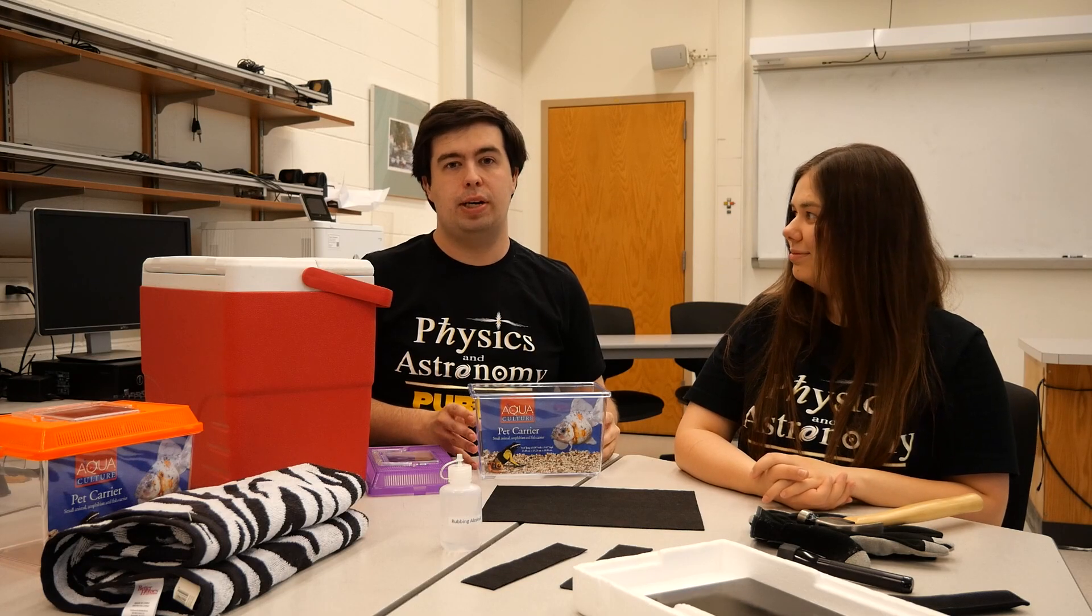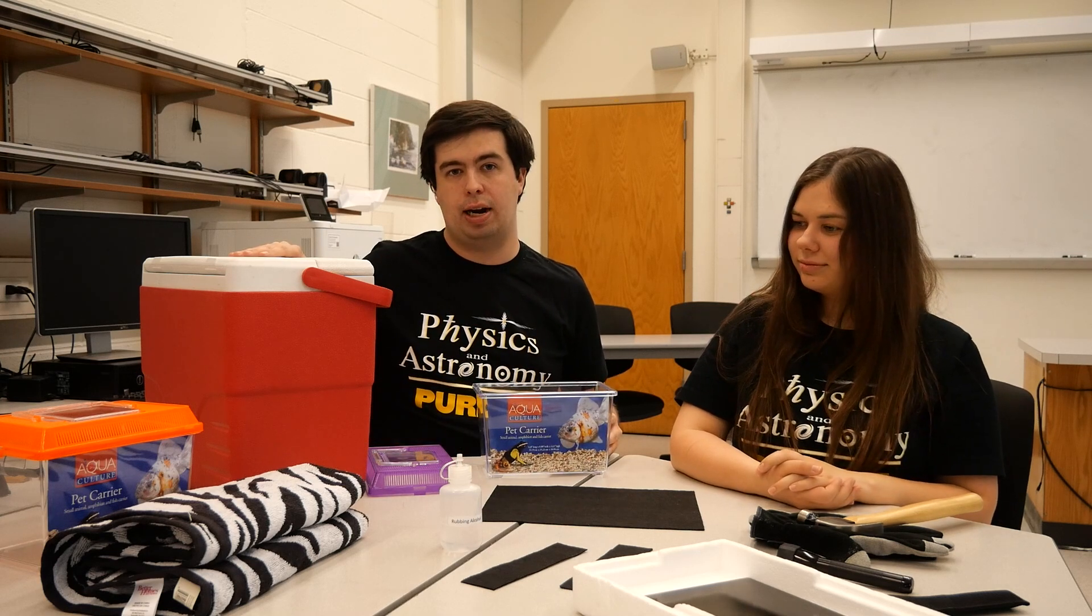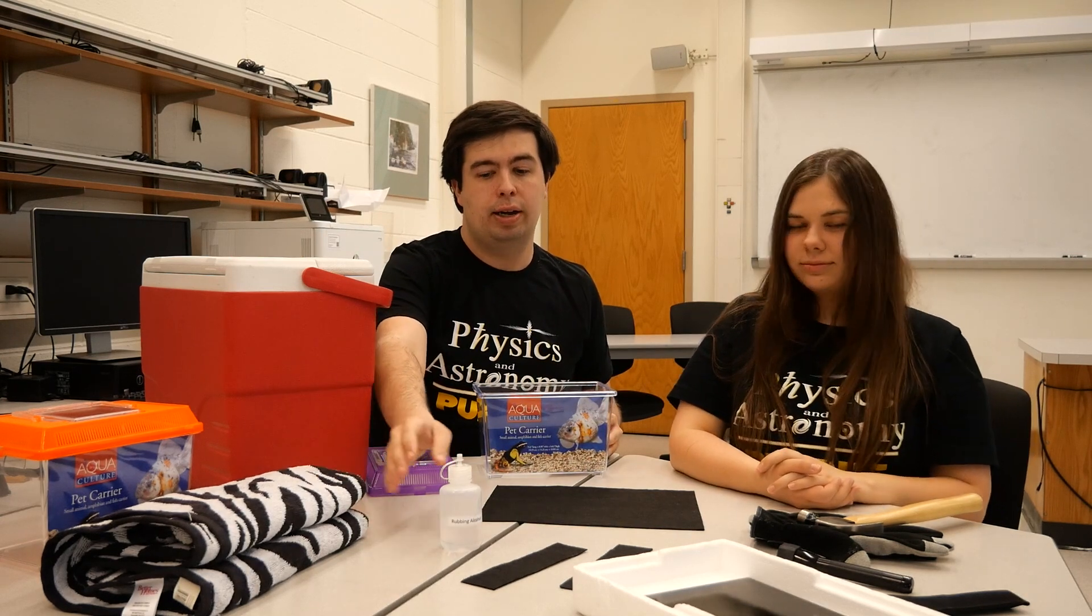Let's go through our parts. What do we need? So we need the bottom clear part from a pet carrier, 5 to 10 pounds of dry ice, a beach towel, and some rubbing alcohol.